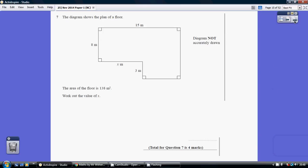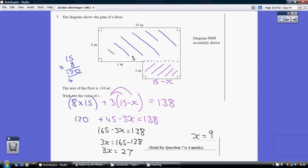Question 7. We know the area of this floor has got to equal 138, and the area, if we look at it as a compound shape, comprises two rectangles, this rectangle here in blue and this rectangle here in purple.